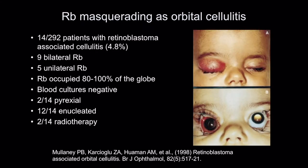Retinoblastoma can also masquerade as orbital cellulitis. Any child that presents with a preseptal or orbital cellulitis to accident and emergency must have a dilated fundus check done so that retinoblastoma can be ruled out. In this series, 14 cases presented in this way — almost 5% with a cellulitis-type picture.